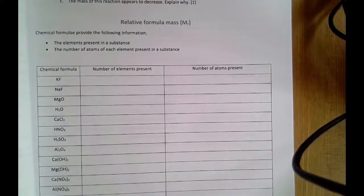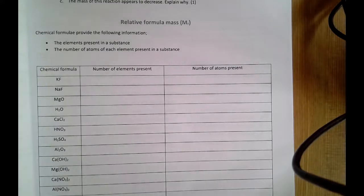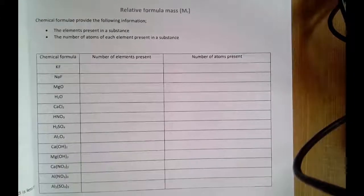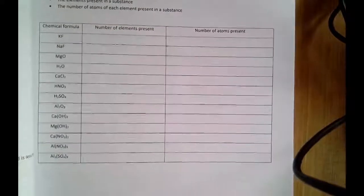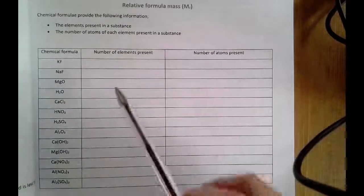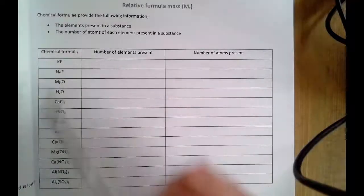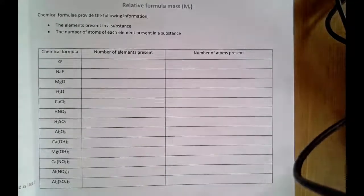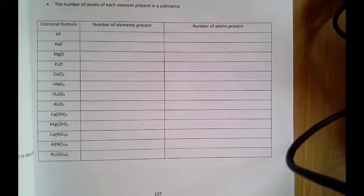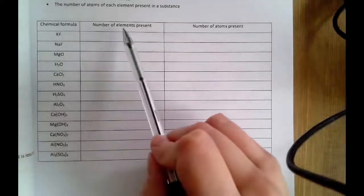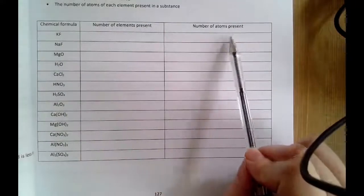In this video we're going to look at relative formula mass, which is part of the CC9 topic and can come up on paper 1 and on paper 2. Before we look at relative formula mass itself, we need to be sure that we are comfortable reading chemical formulas. Chemical formulas tell you what elements are present, but they also tell you the number of atoms of each element present in a substance. They can ask questions where they give you a chemical formula and ask you to write down how many elements are present or how many atoms are present.